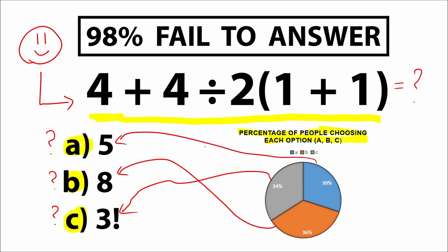Here's the main thing — what makes all the difference in the world is the order we do this problem. Because 34% chose option C and 30% chose option A, and we can't solve this question with two different answers. We can't write an equal sign and say the correct answers are both 5 and 8, for example. So we need to learn the thing called order of operation, because whatever order of operation we select is going to create a different answer.